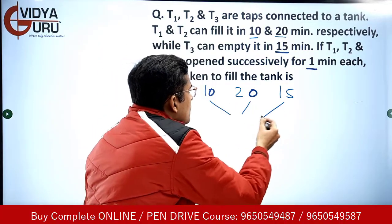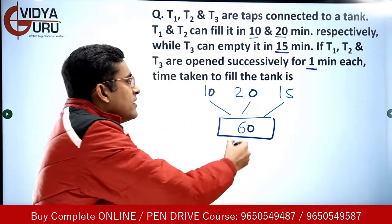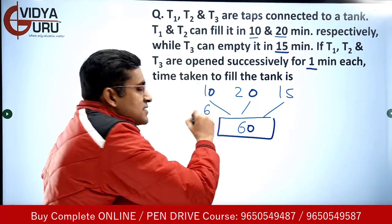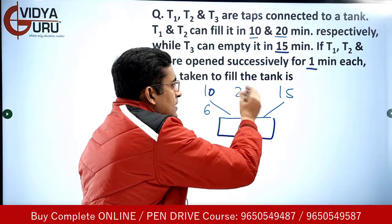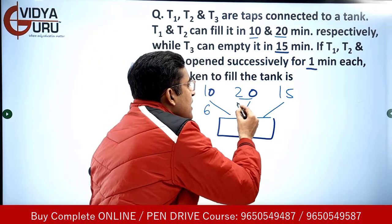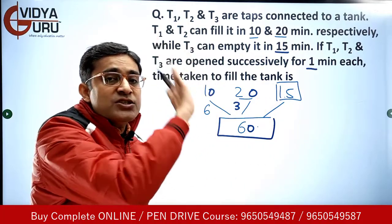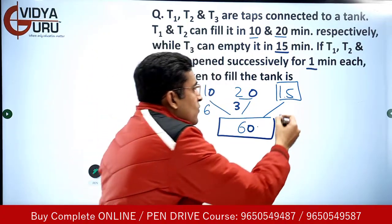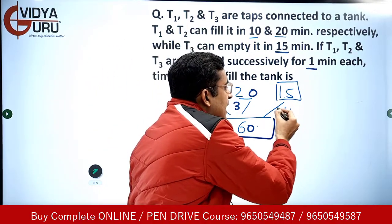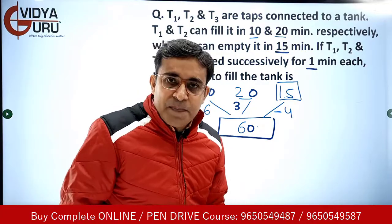The LCM of 10, 20 and 15 is 60 units — that is the total work. T1 takes 10 minutes to do 60 units, so it does 6 units per minute. T2 takes 20 minutes to do 60 units, so that is 3 units per minute. T3 takes 15 minutes to empty the 60-unit tank, so it does 4 units per minute — and since it is emptying the tank, we consider it negative work, i.e., minus 4 units per minute.